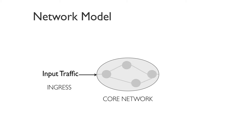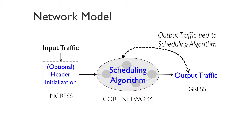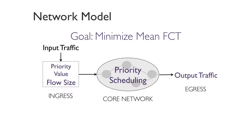To understand this, let us look at our network model. We have some input traffic coming in at the network ingress, which traverses the core of the network where routers run some scheduling algorithm. Many of these may rely on some header state that can be initialized at the ingress, and the resulting output is then seen at the network egress. According to the conventional mindset, the output traffic characteristics at the egress are tied to the scheduling algorithm running in the routers.